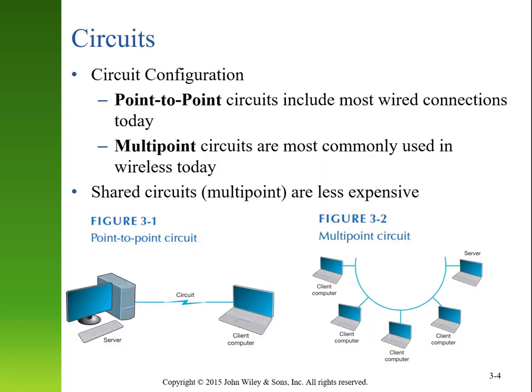There are a couple ways that we can connect devices. One would be point-to-point, where we connect one device directly to another. An alternative would be multi-point, where multiple devices are connected using the same circuit. In most wired connections today, we use point-to-point, whereas wireless uses the same frequencies for multiple devices simultaneously. Shared circuits tend to be less expensive but have some downsides as a shared resource.